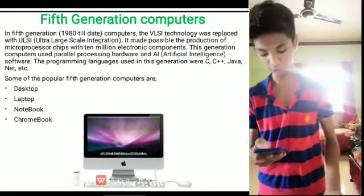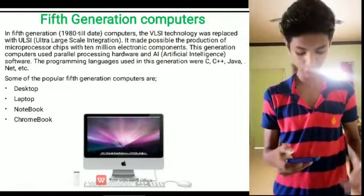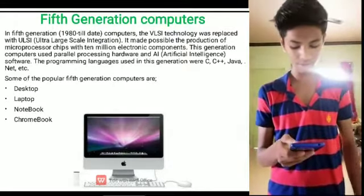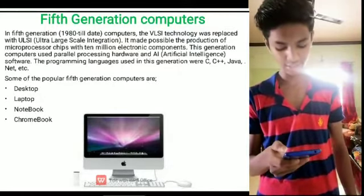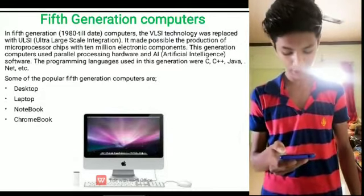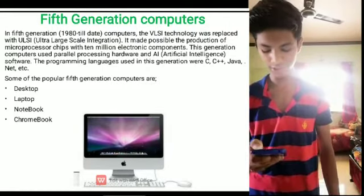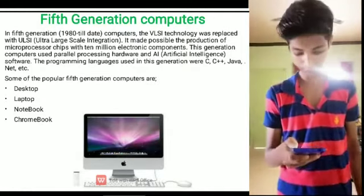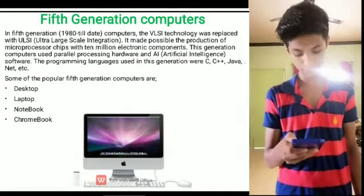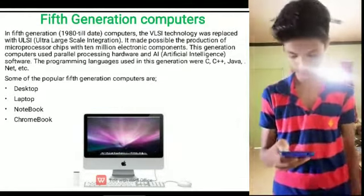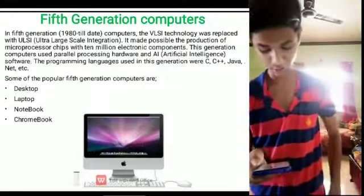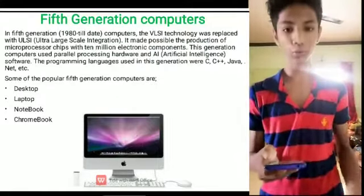Fifth Generation Computers (1980–present): In the fifth generation, VLSI technology was replaced with ULSI (Ultra Large Scale Integration), making it possible to produce microprocessor chips with 10 million electronic components. These computers used parallel processing hardware and artificial intelligence software. Programming languages used include C, C++, Java, .Net, and others. Some popular fifth generation computers include Desktop, Laptop, Notebook, and Chromebook. Here we end our topic. Thank you.